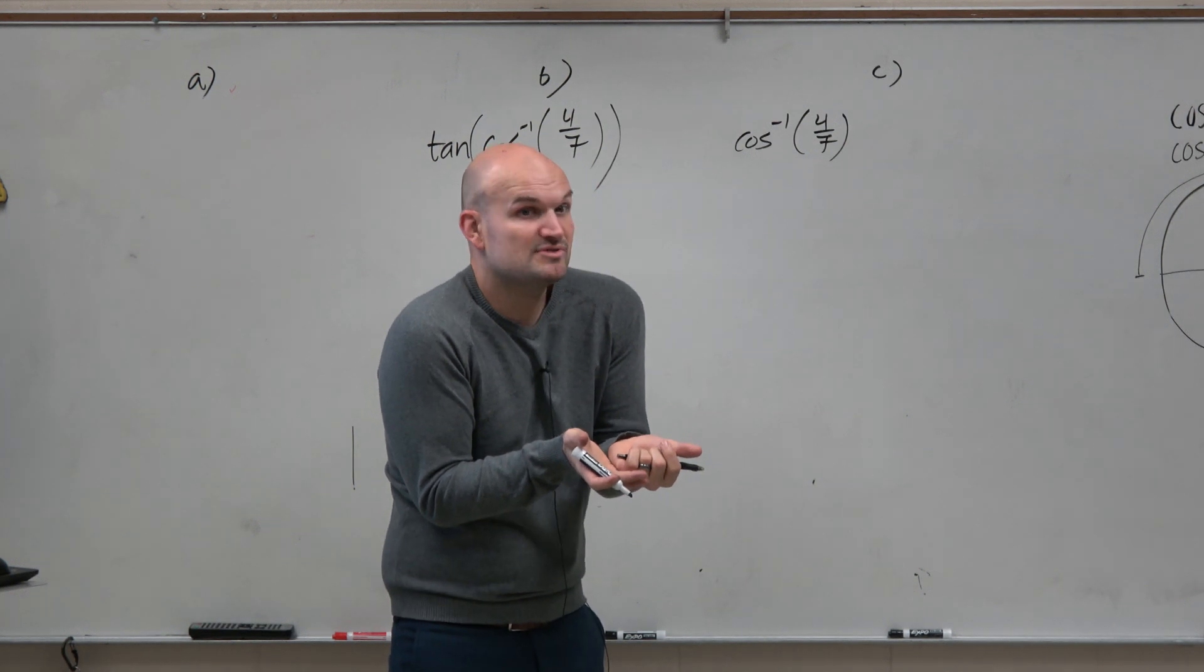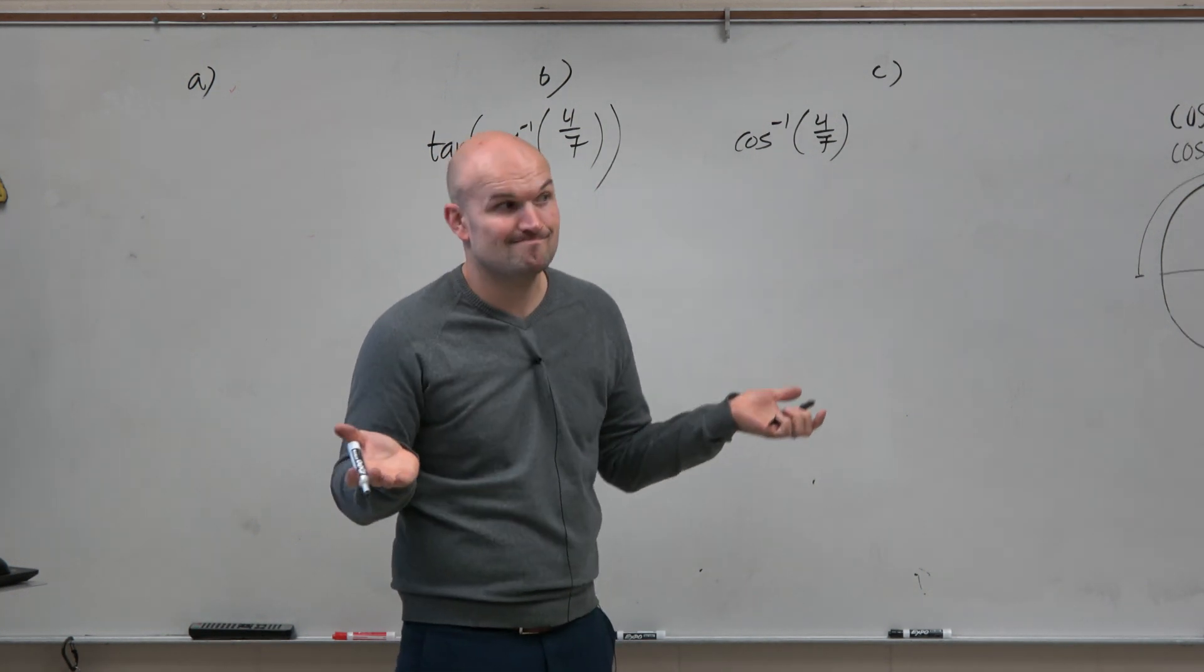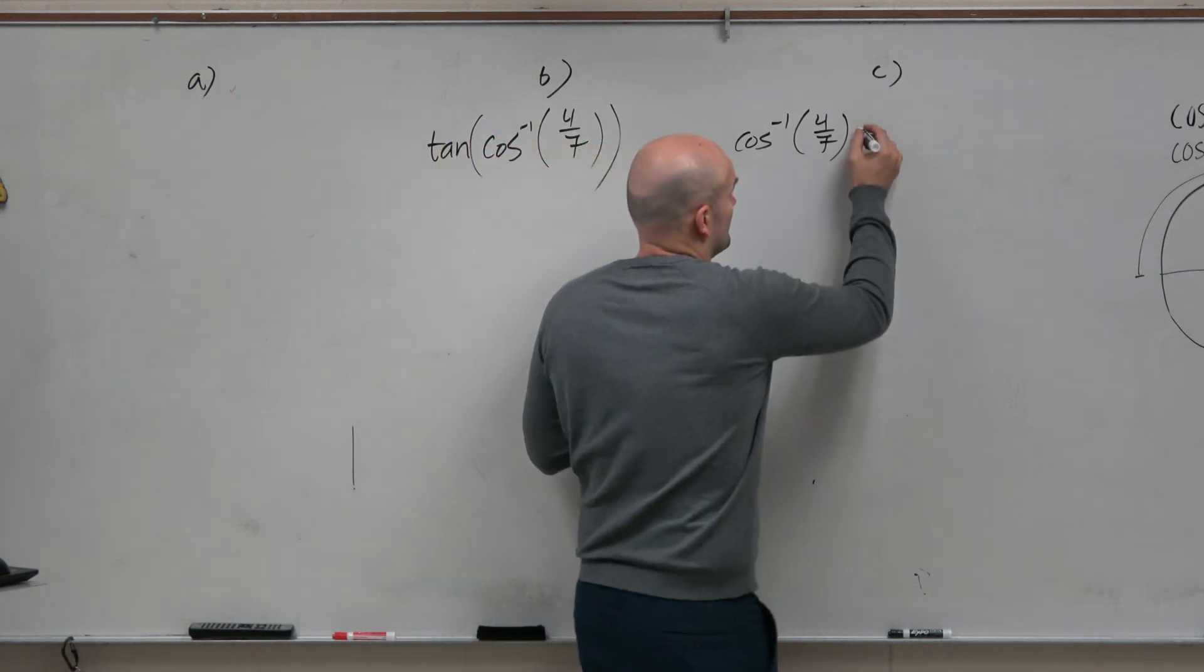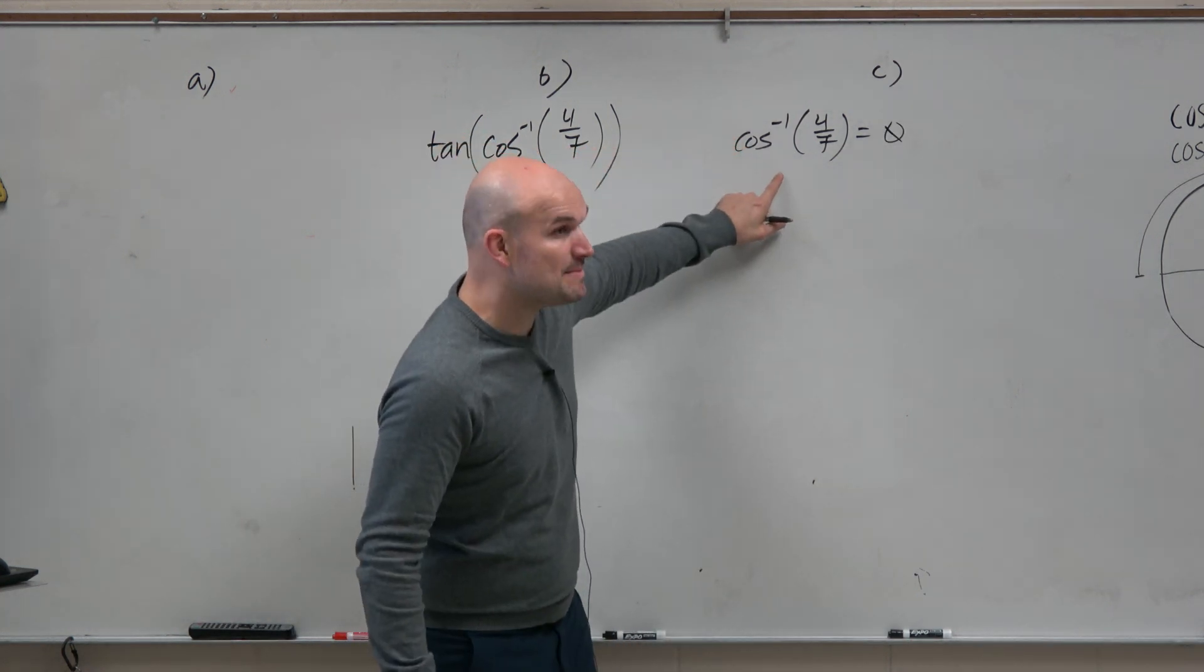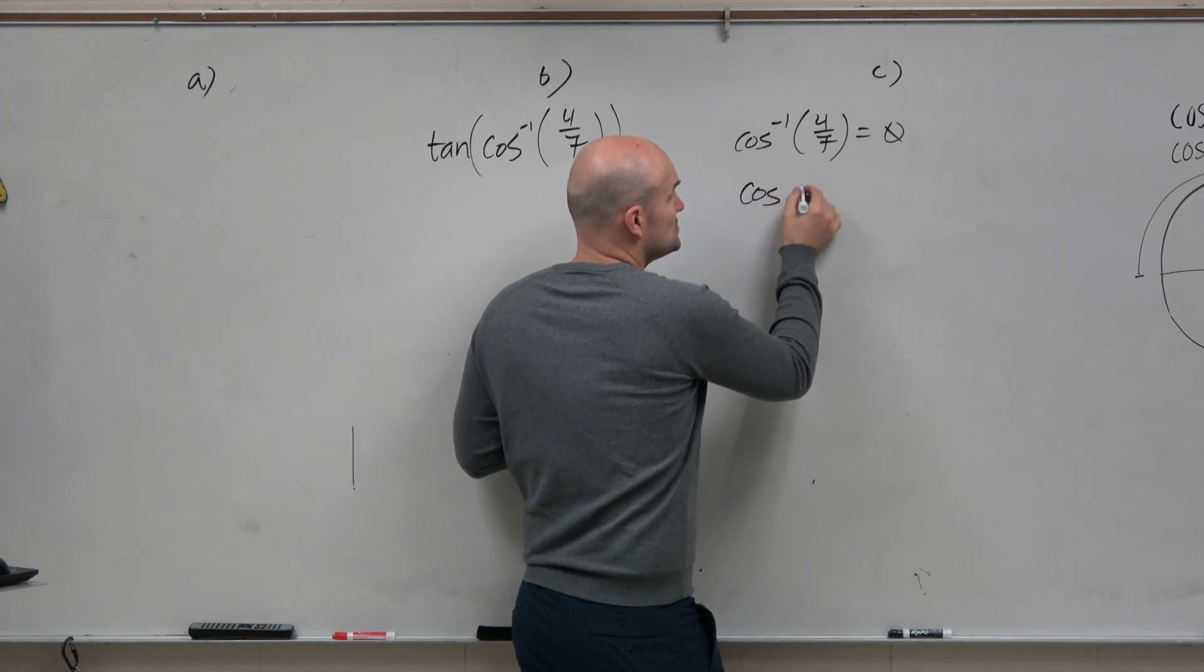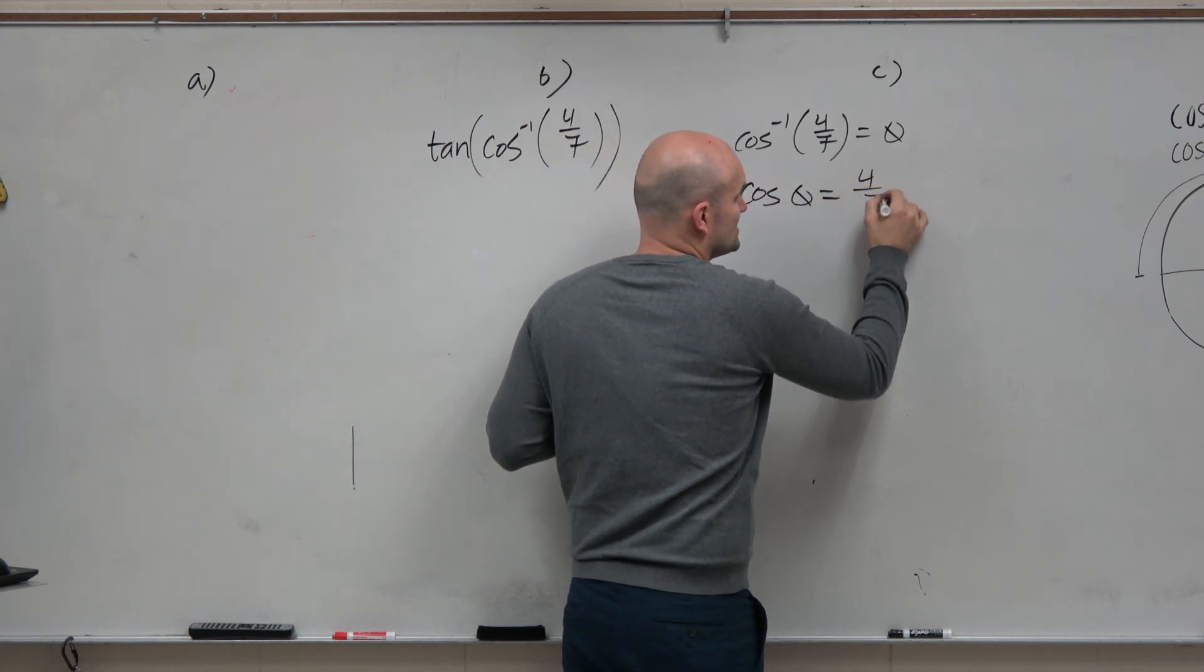Now, I don't know what this angle is. So let's call it theta. And then if I have the statement like this, that means I could also write this as cosine of theta equals 4 over 7.